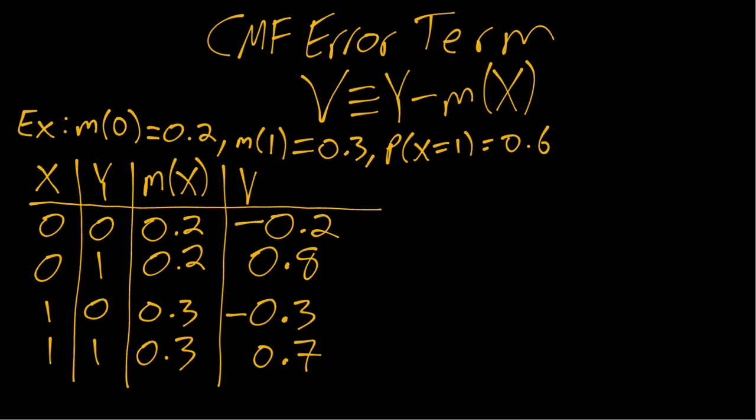And just to emphasize in hopes of avoiding some confusion that I had as a student, this is just by definition. So more commonly you might see somebody say, I'm going to write out a CMF model in error form like this. But when they do that, if they say explicitly this is a CMF model, they mean that this v is being defined in this particular way.